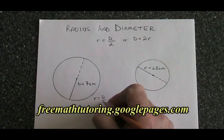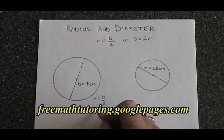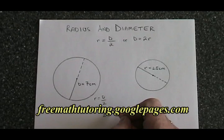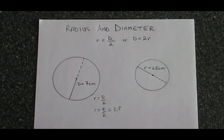R equals D over 2. Plugging in the 7 cm, we have R equals 7 over 2, which means R is equal to 3.5. The radius of this circle is 3.5 cm.